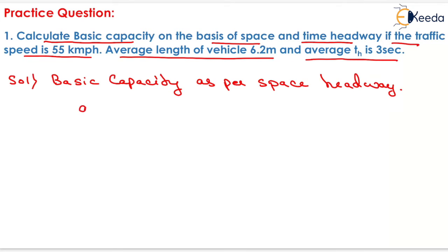We know the formula that is q theoretical equals to 1000 v upon s. Now, v is given in the question that is 55 km per hour, we need to determine the value of s which will be equals to 0.2 v plus l.